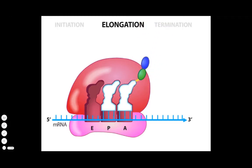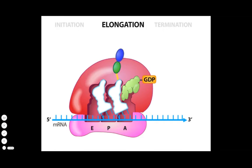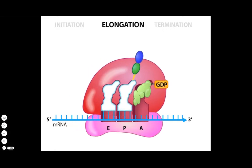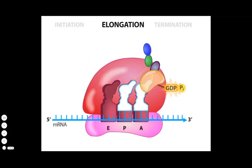The third step is called translocation. An elongation factor called EF-G associated with GTP binds to the ribosome. The GTP is hydrolyzed, providing the energy to ratchet the 50S and 30S subunits ahead one codon. This maneuver opens up the A site and slides the uncharged tRNA into the last site called the E or exit site. The next aminoacyl tRNA that enters the A site creates a conformational change in the ribosome that ejects the uncharged tRNA. These elongation steps repeat along the mRNA.